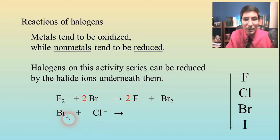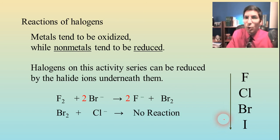If we have bromine liquid being added to chloride ions, here's bromine on our activity series. The chloride ions are too high, aren't they? So that's not going to work. That's a no reaction. So halogens can only be reduced by the ions underneath them.